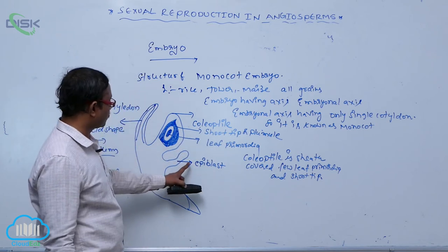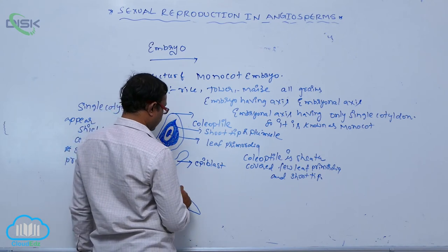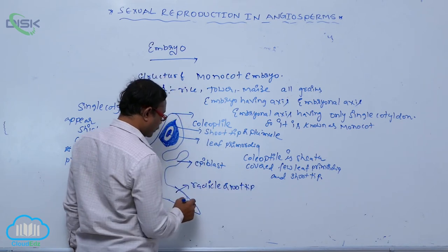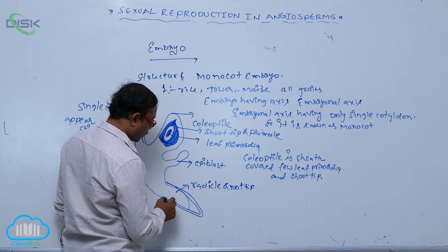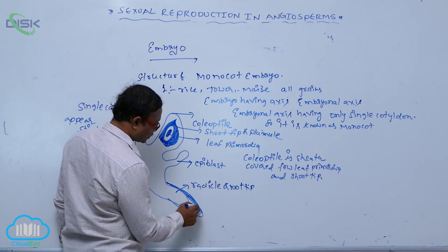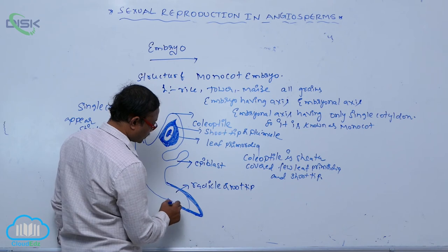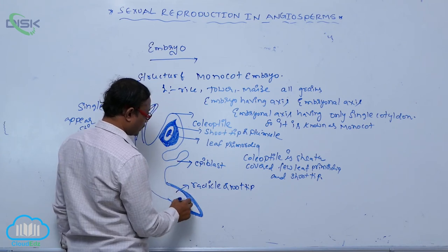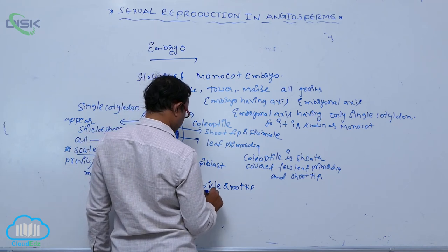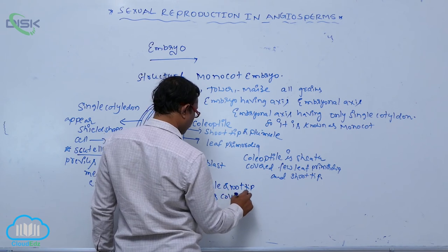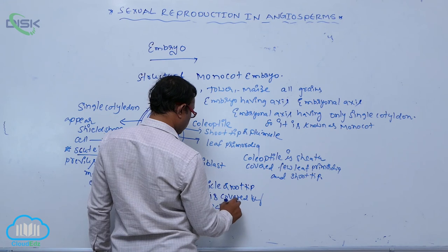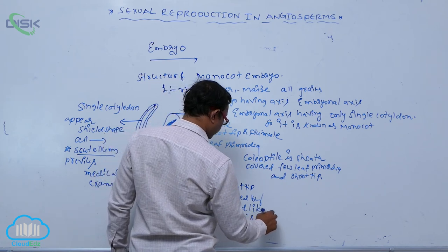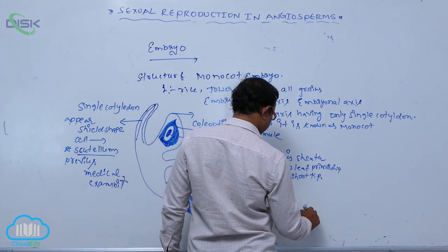Below the epiblast is the radicle or root tip. The radicle and root tip are covered by a hard pad-like structure. This undifferentiated hard pad-like sheath covering the radicle is known as the coleorhiza. These — coleorhiza and coleoptile — are the most important objective points.